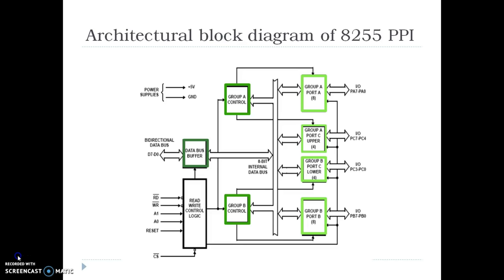The data bus buffer is a set of special registers which are used to store data that is either coming from the microprocessor or going towards the microprocessor. When the data is going towards the microprocessor, it is supplied by either of the three ports. For the overall control or functioning of this IC, we have a special block known as the read-write control logic block, which consists of some very important control signals. These control signals or control lines are coming from the microprocessor to the peripheral.